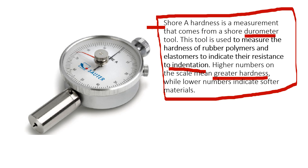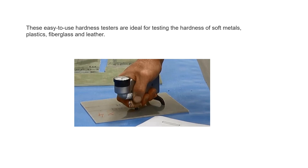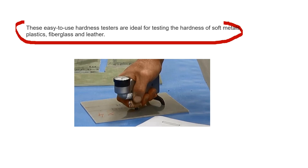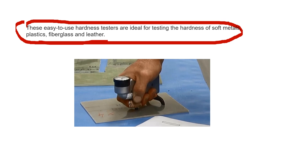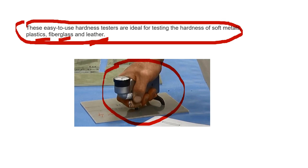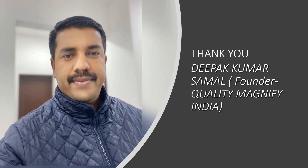For GRP and GRE materials, we use the Barcol hardness test. The Barcol tester is easy to use and is ideal for testing hardness of soft metals, plastics, fiberglass, and leather. So now you have a brief idea about hardness testing — how hardness testing of steel is done, how hardness testing of rubber is done, and how hardness testing of plastics, fiberglass, or soft metals is performed.